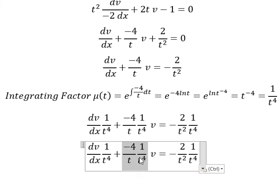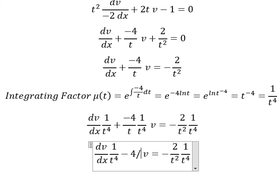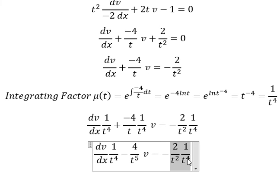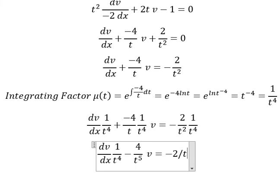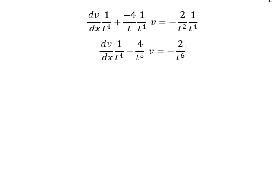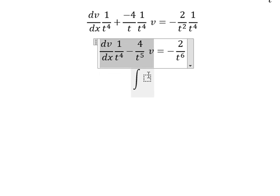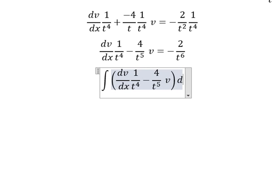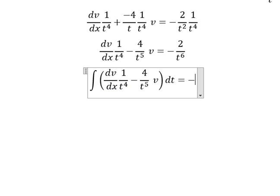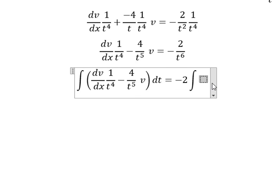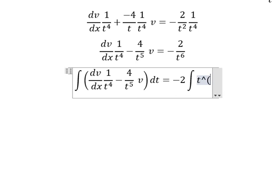So on this side we have negative 4 over t to the power of 5, and this one we have 2 over t to the power of 6. Now we put the integration for both sides. This one I can write as t to the power of negative 6.